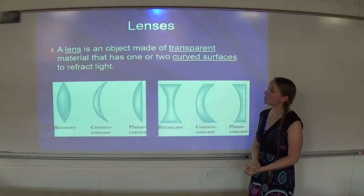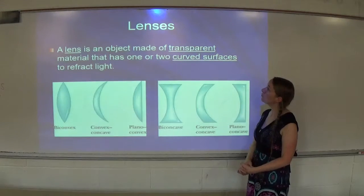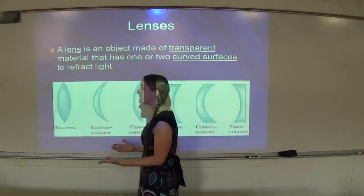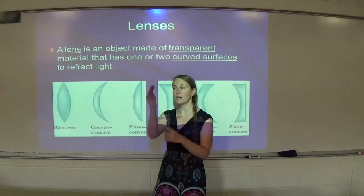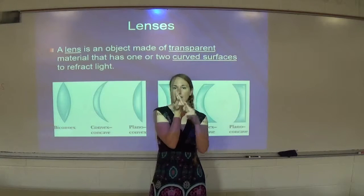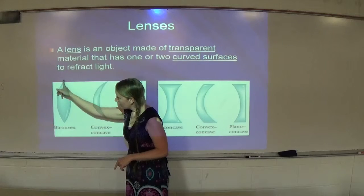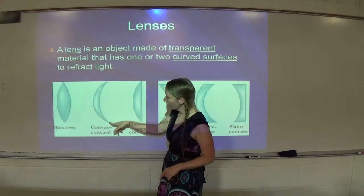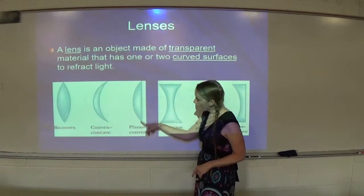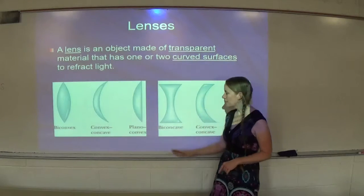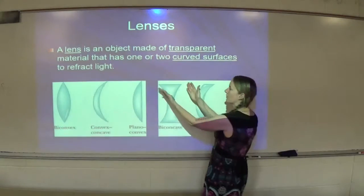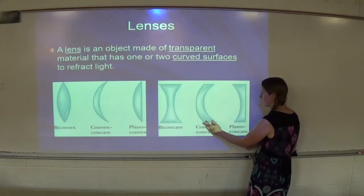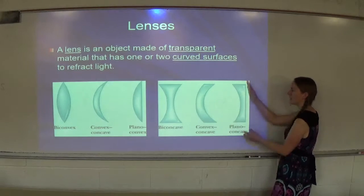A lens is an object made of transparent material that has one or two curved surfaces to refract light. Here are some examples of convex and concave lenses. Remember, concave makes a cave and convex is the opposite. We have examples with convex on both sides, convex on one side and concave on the other, convex and a plain side, both sides concave, one side concave and one side convex, and one side concave with one side plain.